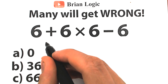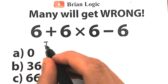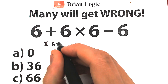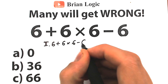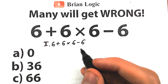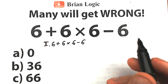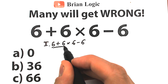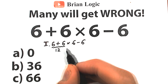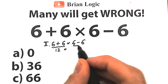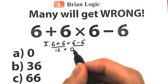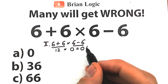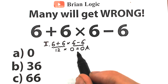So first interpretation — let's look at it. We have 6 plus 6 times 6 minus 6. These types of people don't know about order of operations; they solve this question randomly, starting from the left-hand side. We have 6 plus 6 equal to 12, times we have 6 minus 6 on the right-hand side, equal to 0. So it looks like the correct answer is 0. This is Option A.